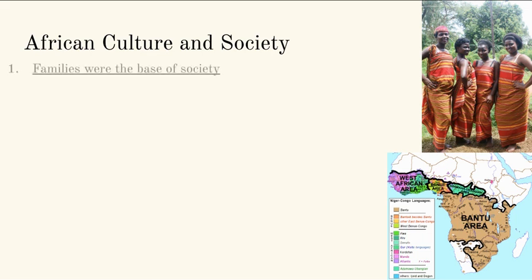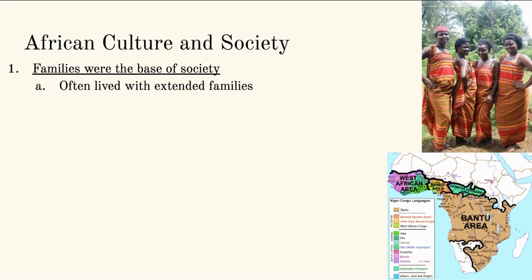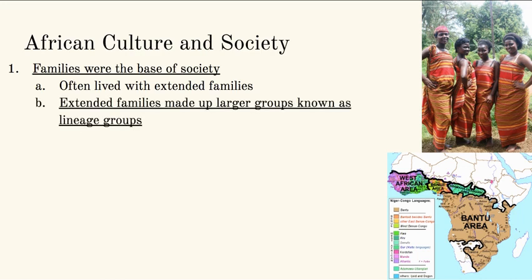Now we get to culture and society. Families are the base of society across most of African history, and the family is the center of life. A lot of times they lived with their extended families — aunts, uncles, cousins, second cousins, great grandparents — everybody in the same area, acting as one unit. Extended families might live in the same area, and if multiple extended families are all grouped together, that creates larger groups of people known as lineage groups.